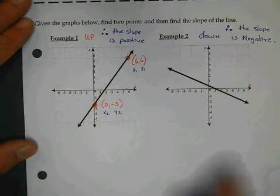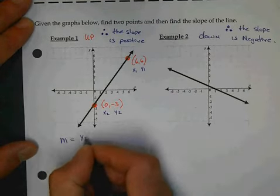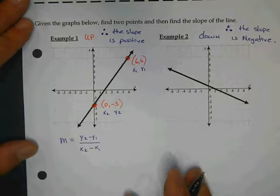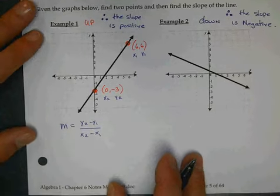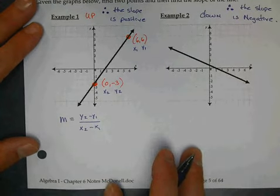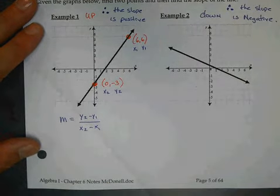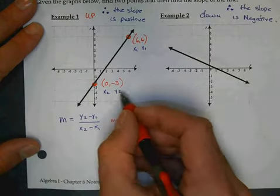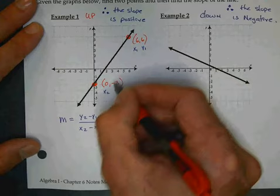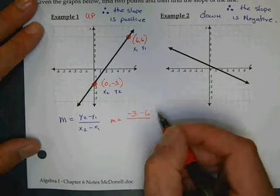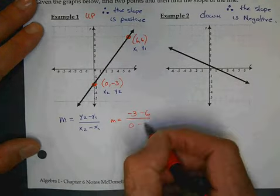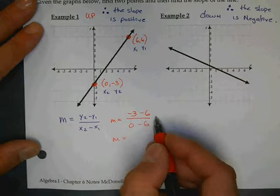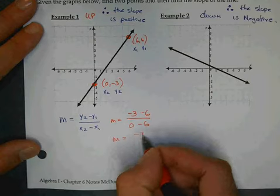Here's our formula. Let's write it together. M equals y2 minus y1 over x2 minus x1. Good. That's excellent. Glad to see they're doing math. So let's plug in our values. y2 is negative 3 minus this 6. x2 is 0 minus that 6. What's negative 3 minus 6? Negative 9 over negative 6.